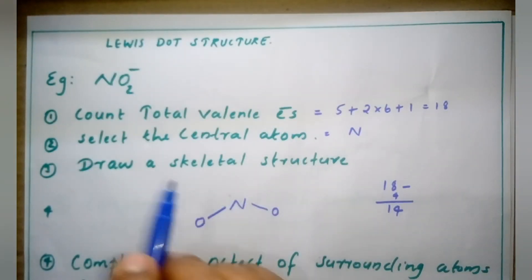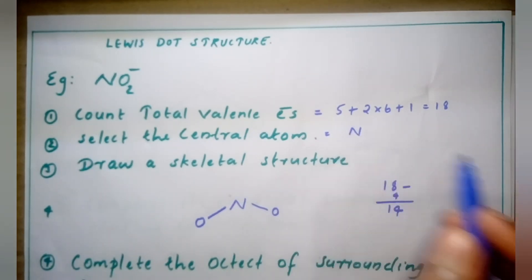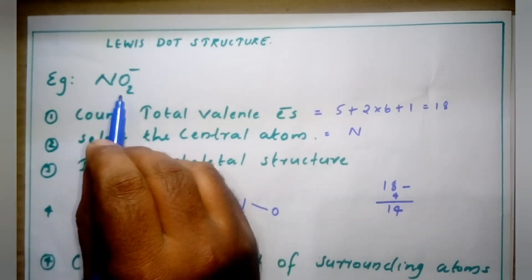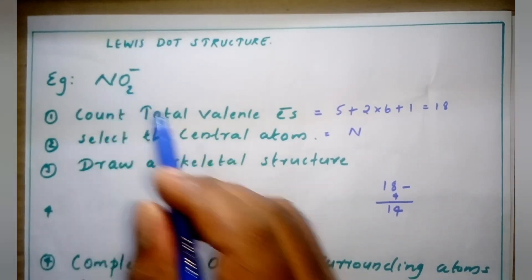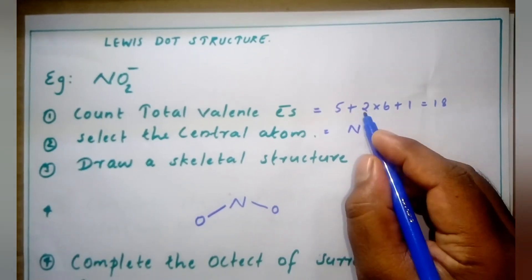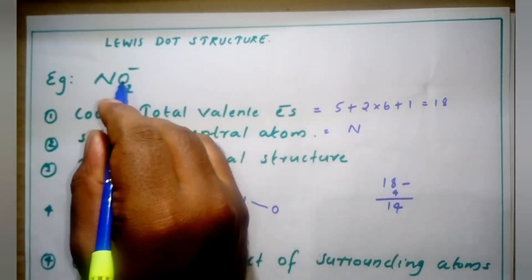There are three atoms in NO2 minus: one nitrogen and two oxygens. How many total valence electrons are there? Nitrogen has five valence electrons because it is a Group 15 element, and each oxygen has six valence electrons. So five plus two into six, plus one more electron because there is a negative charge.